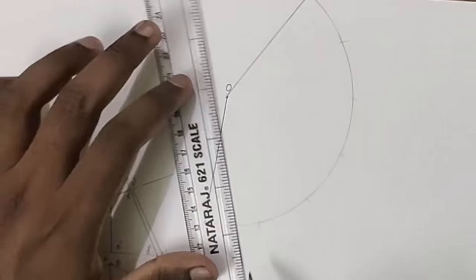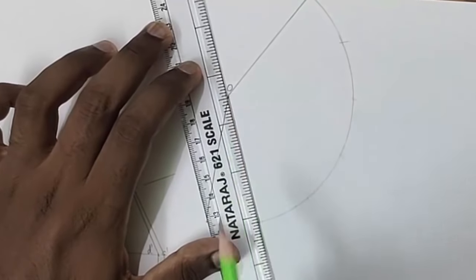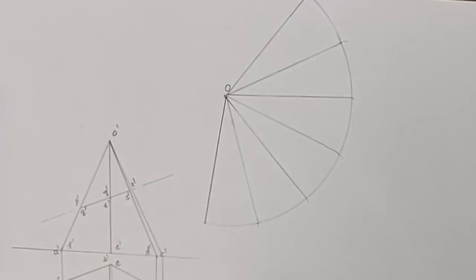Then we have to introduce the cutting plane. For that we need to draw the lateral edges using thin lines. Whatever I have drawn so far should be in thin line. Now mark the points in the development.